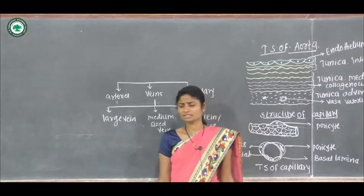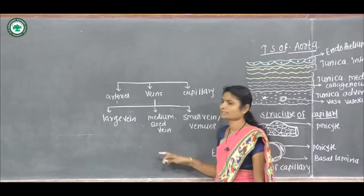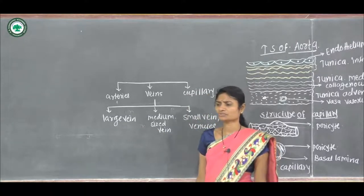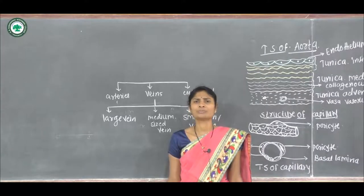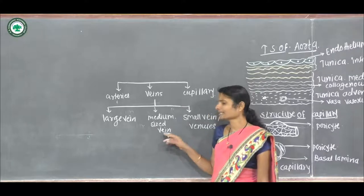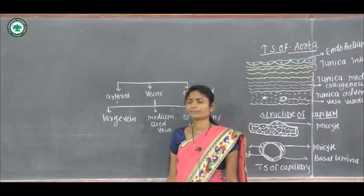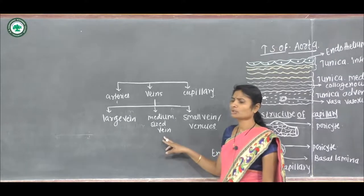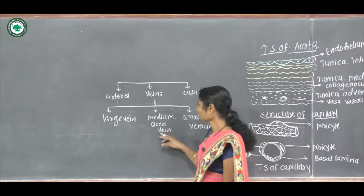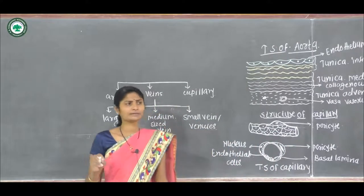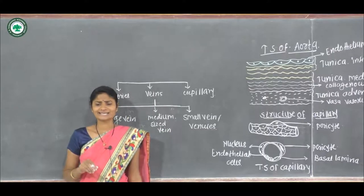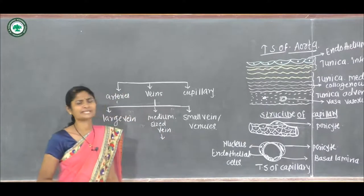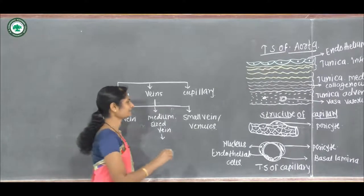Vasa vasorum are also present in large veins. Medium-sized veins include the branches of large veins such as the precava and innominate branches, except for the main trunk. The intima shows a thin layer with polygonal endothelial cells. The media is thin and composed of circular muscle fibers, collagen, elastic connective tissue, and adventitial cells. The adventitia in medium-sized veins is well developed.